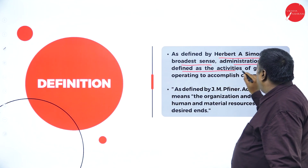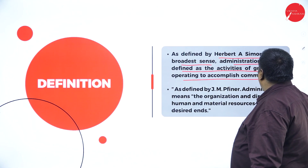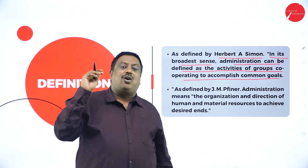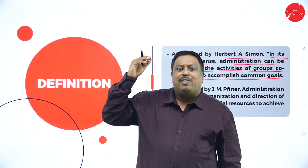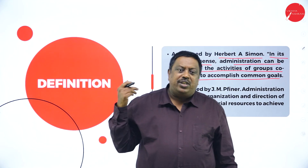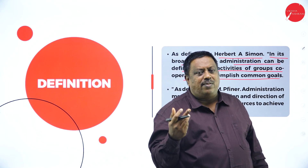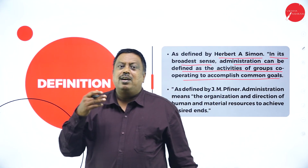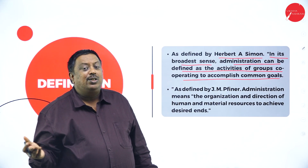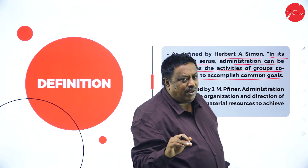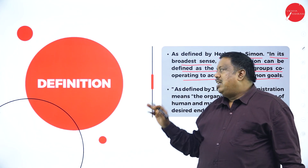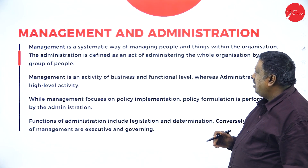By definition, Ordway Tead says: in its broadest sense, administration can be defined as the activities of a group cooperating to accomplish common goals. Administration is about reaching the common goal set by top-level management. It changes the personal goals of employees into the objectives of the organization, converting them into a common goal, and ensures cooperation and coordination throughout the organization.